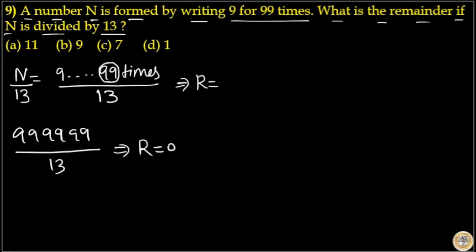Here 9 repeated 99 times means after each set of 6 nines the remainder will be 0. The cycle will repeat after each set of 6 nines.